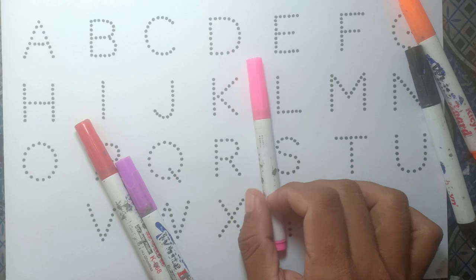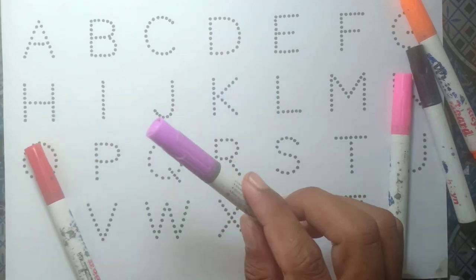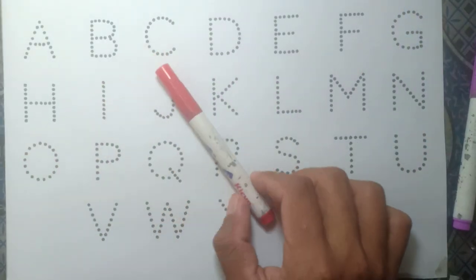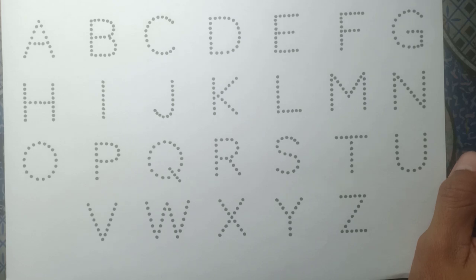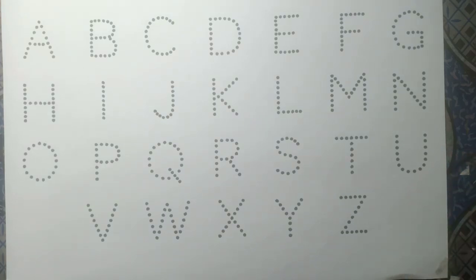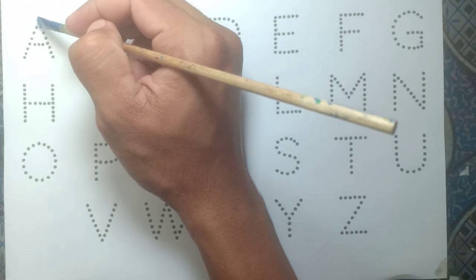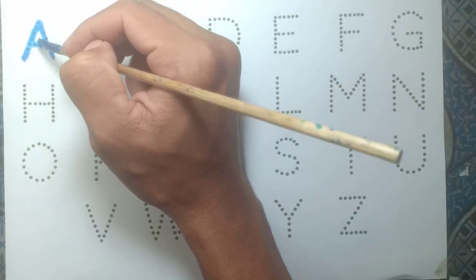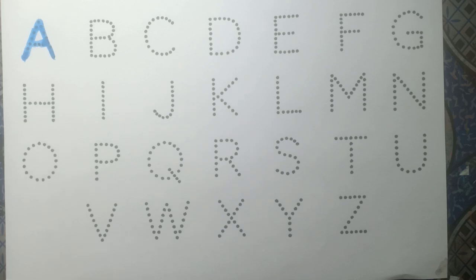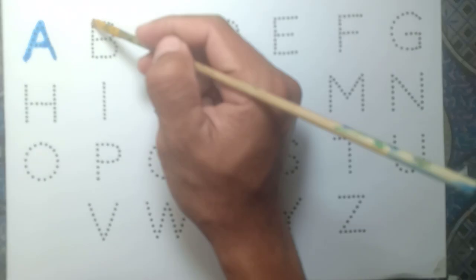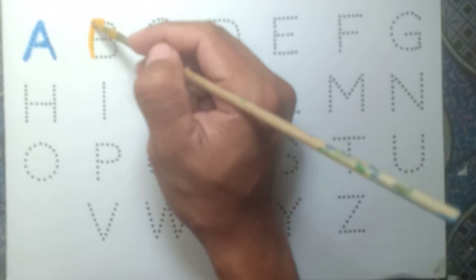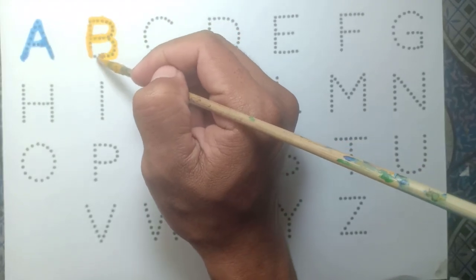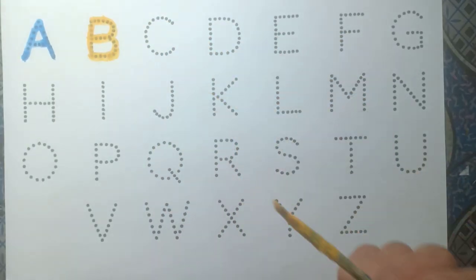Pink color, purple color, and red color. Okay, so let's learn the alphabet. A for apple, blue color. And B, B for ball, yellow color.